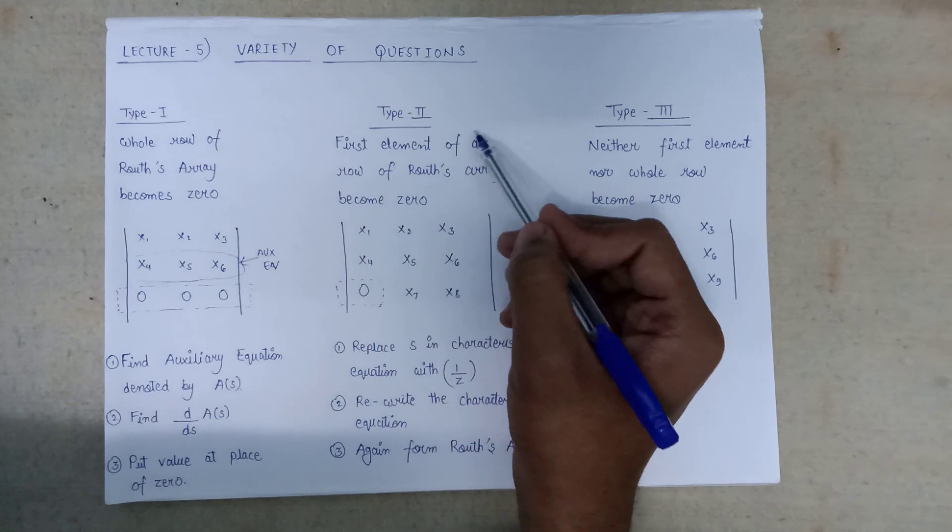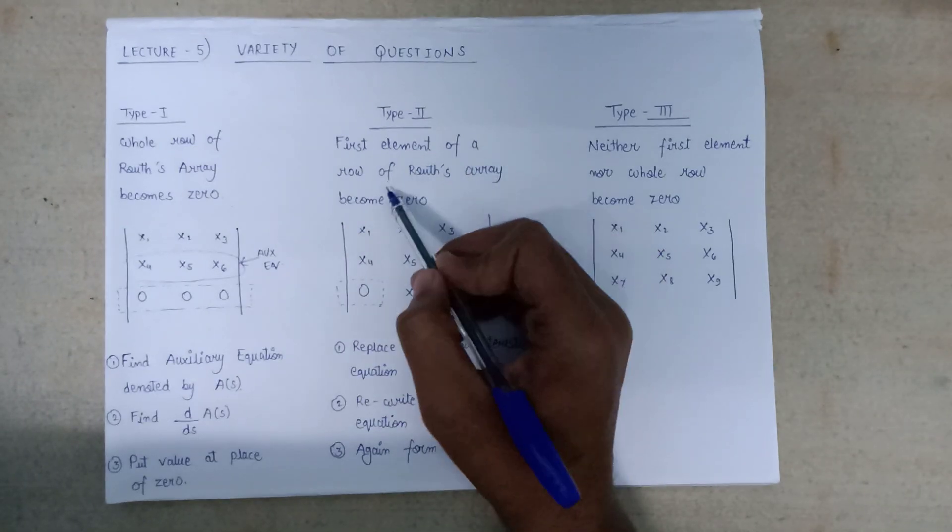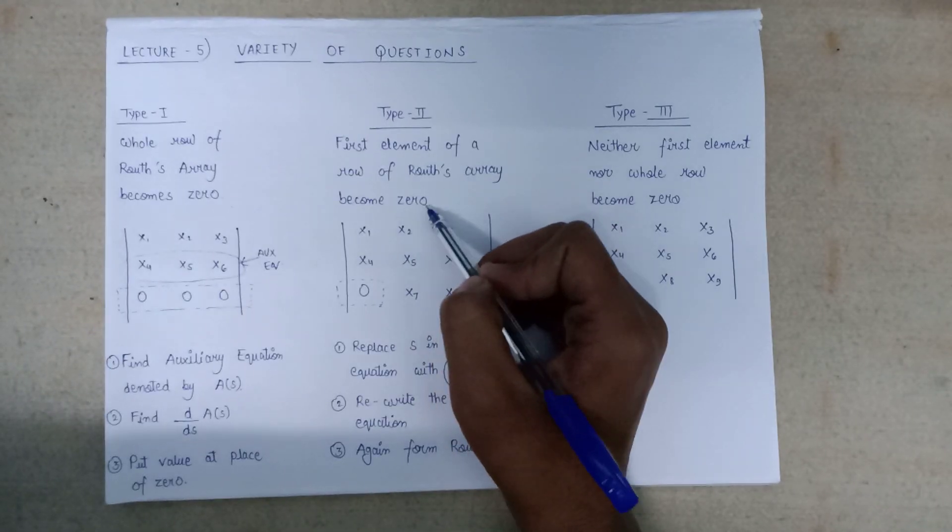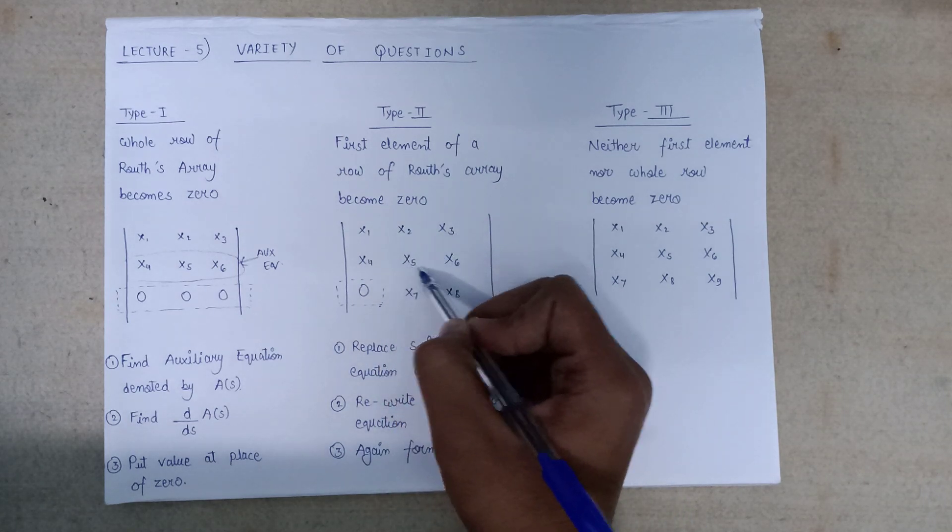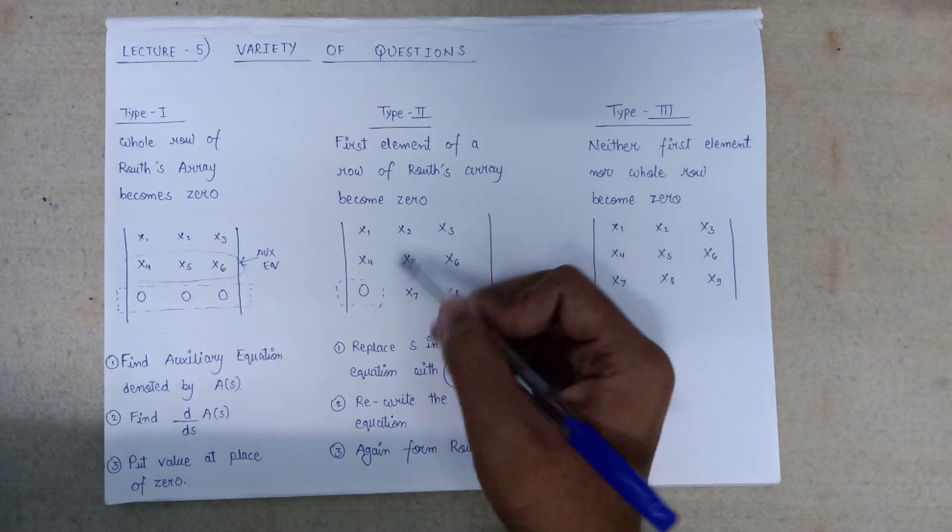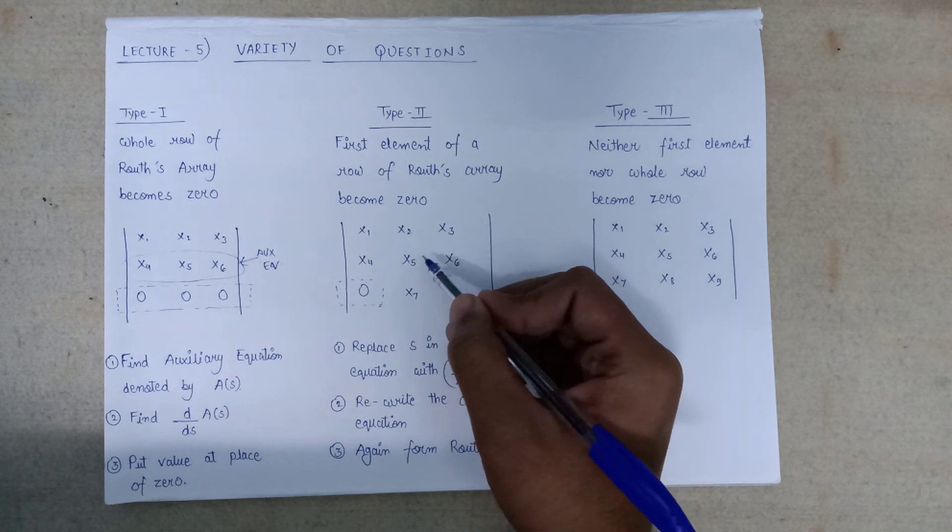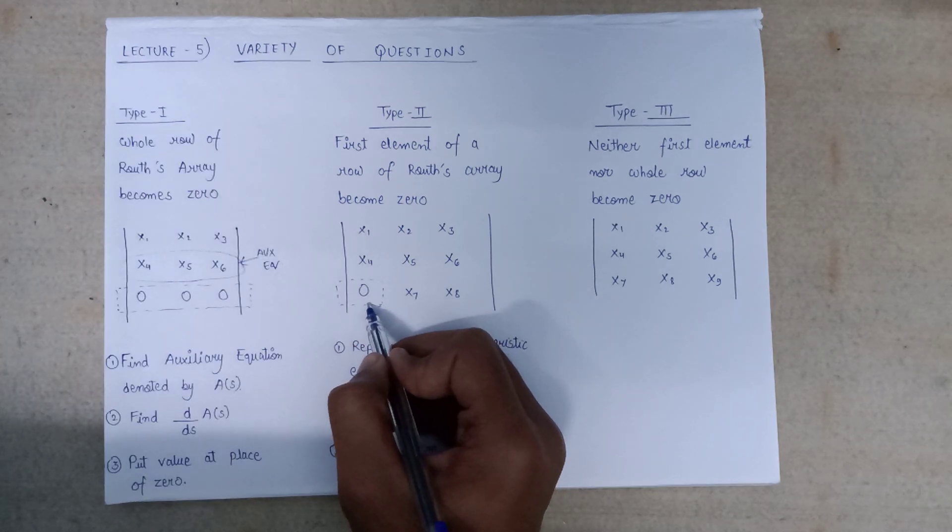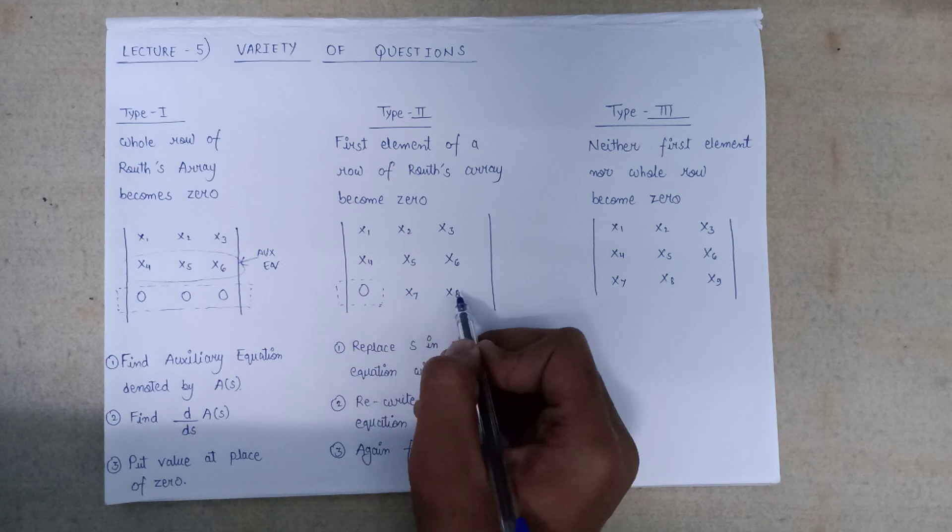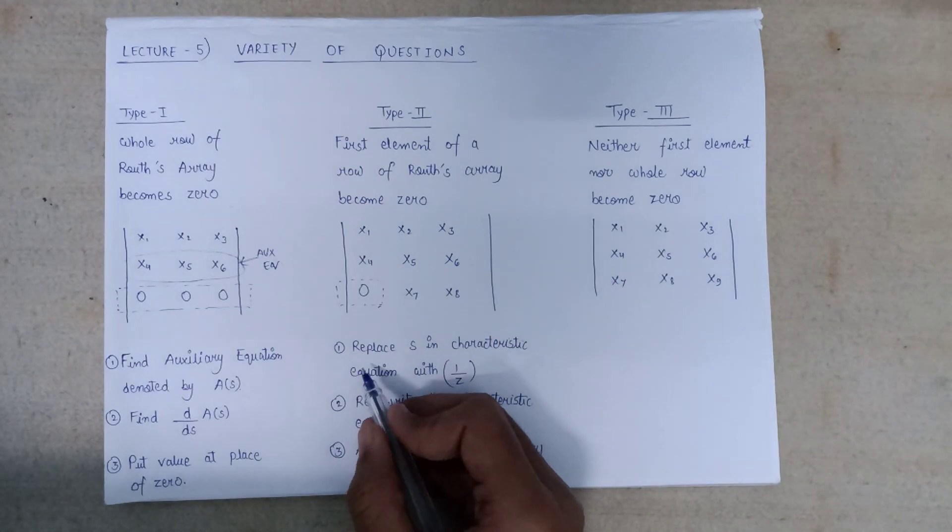Let's move on to Type 2 questions. In Type 2 questions, we will encounter when the first element of a row of the Routh array becomes zero. In this type of question, x1, x2, x3, x4, x5, x6, x7, x8, and further elements are non-zero, but the first element of any row will become zero while other elements remain non-zero. This type of question comes under the Type 2 category.